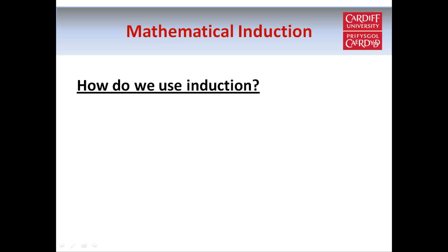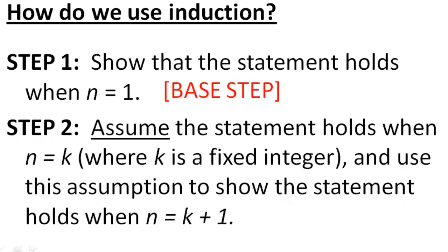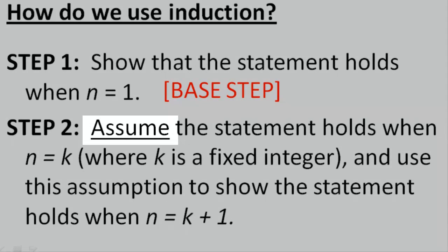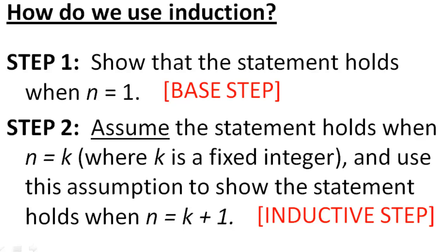We have a statement which we're trying to prove for all natural numbers n. The first step is to show that the statement holds when n equals 1, and this is called the base step. The second step is to assume the statement holds when n equals k for some fixed number k, and then use this assumption to show that the statement holds when n equals k plus 1. This is called the inductive step, and that's all there is to it.